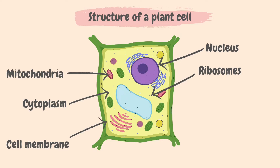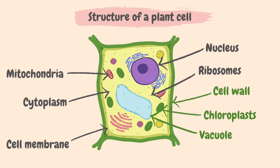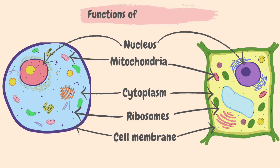The additional organelles that a plant cell has are shown in green. This is the cell wall, made of cellulose. These are chloroplasts that contain the green pigment chlorophyll. This is a vacuole that contains cell sap. The organelles common to both an animal cell and a plant cell are nucleus, mitochondria, cytoplasm, ribosomes, and cell membrane.